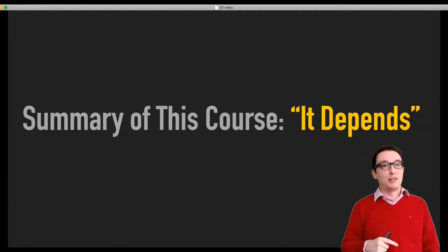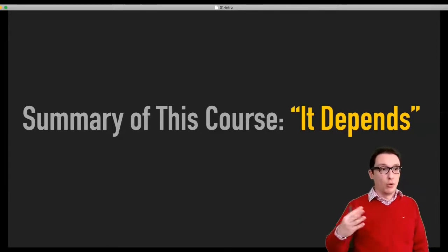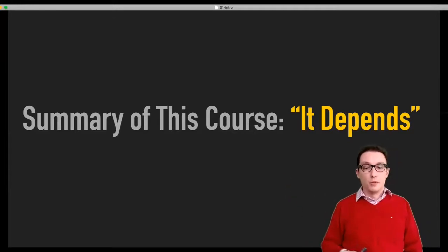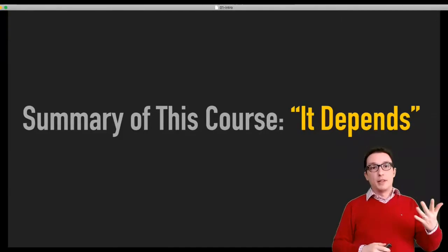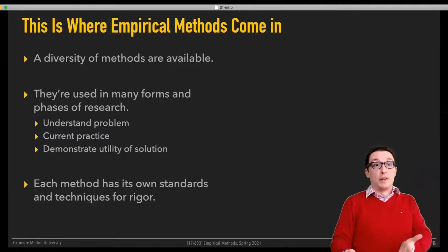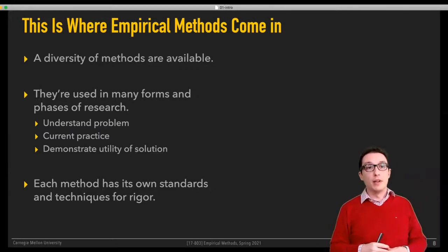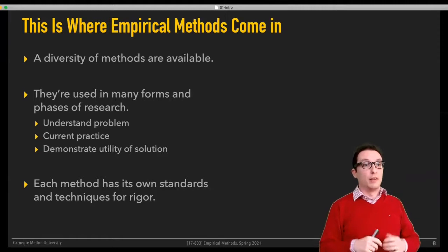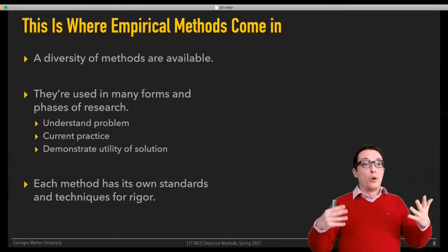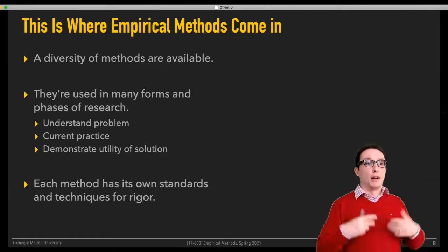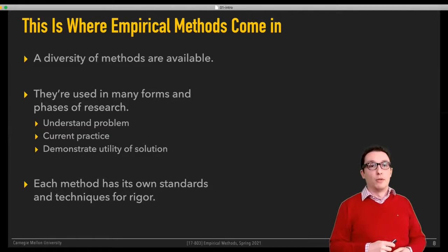The one-sentence summary of this course is that it depends. There's no one-size-fits-all solution—there's no one magic silver bullet method that you could always use to create perfect research. The answer is: it depends on lots of things. It turns out there's a diversity of methods available, used in many forms and in many phases of research—used to understand the problem, understand practice, demonstrate the utility of a particular solution. They all have their own standards and techniques for rigor. What I'm hoping this course will do is expose you to what these are and embed these standards and techniques for rigor in your mind.